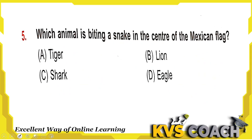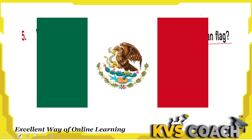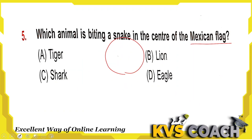Next: which animal is biting a snake in the center of the Mexican flag? Look at the Mexican flag — you can see the animal which is biting the snake, and this animal is an eagle. So option D, eagle, is the right answer.